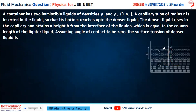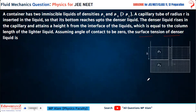The height of rise is H, which equals this layer of Rho 1 density. Assume the angle of contact to be zero — theta equals zero. We need to find the surface tension of the denser liquid.